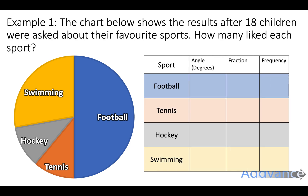So here's an example straight off. The chart below shows the results after 18 children were asked about their favourite sports - how many liked each sport. We know the full pie chart represents 18 children, and straight off we can see that half of the children liked football.